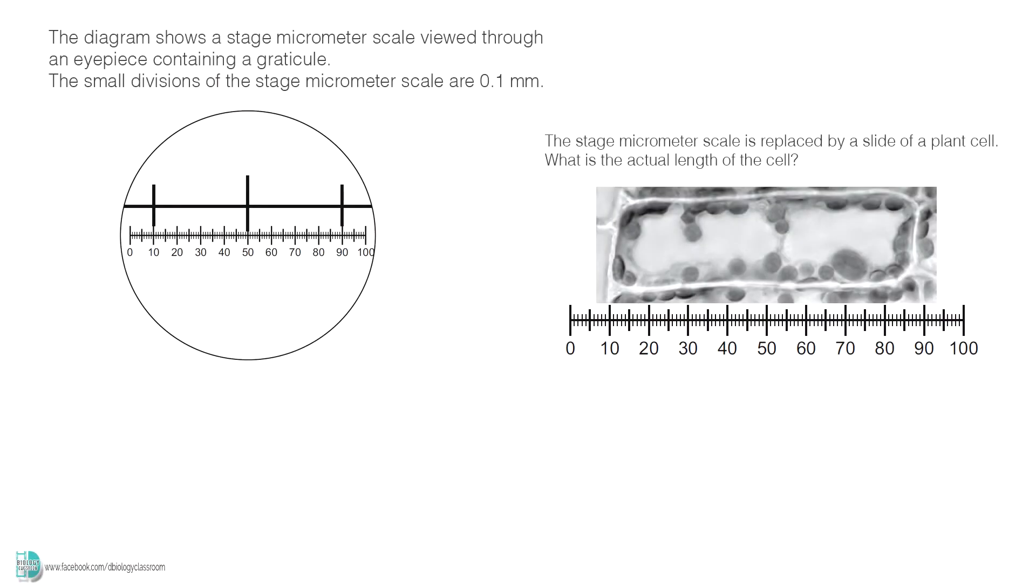In the next scenario, you have to use an eyepiece graticule to measure a cell viewed under a microscope. An eyepiece graticule does not have an actual measurement, so you have to first calibrate it by using a stage micrometer. According to the question, the smallest division on the stage micrometer is 0.1 mm. Since 40 of the divisions on the eyepiece graticule is equal to 0.1 mm, each of the divisions is 0.0025 mm or 2.5 micrometer.